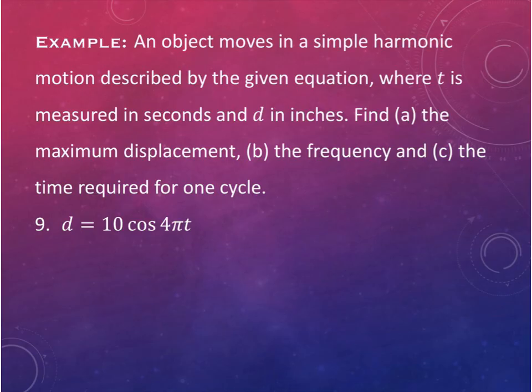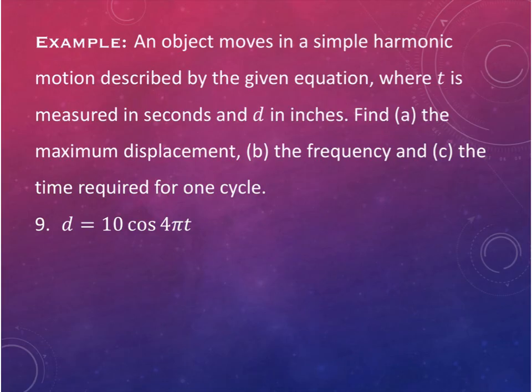The last problem gives us the equation and asks us to find things from it. T is in seconds, d is in inches. Part A: maximum displacement. That's the amplitude - which is 10. Even if the equation had -10, the maximum displacement is still 10 inches because displacement and amplitude are positive quantities.